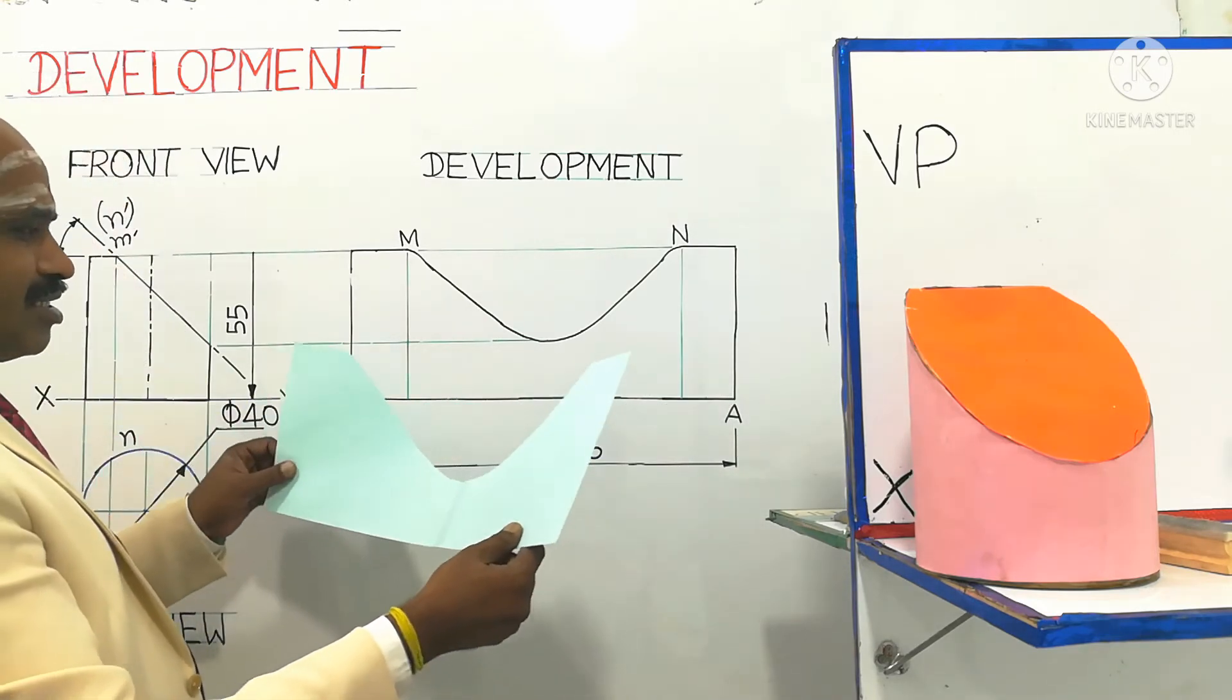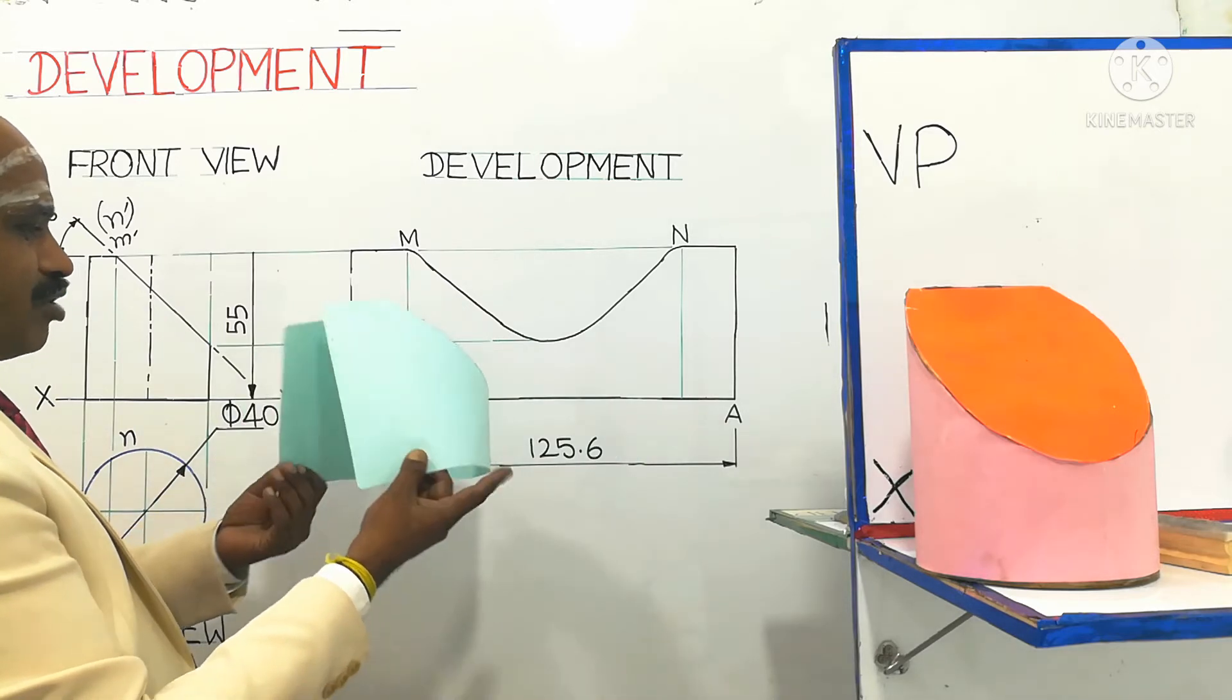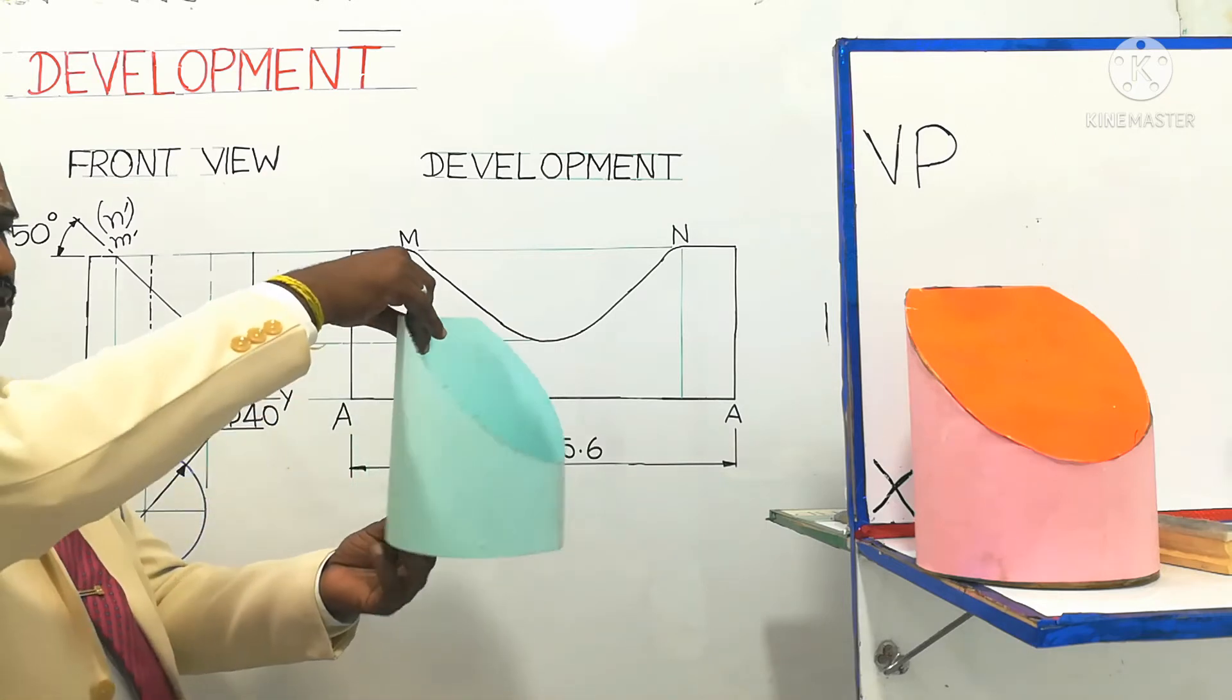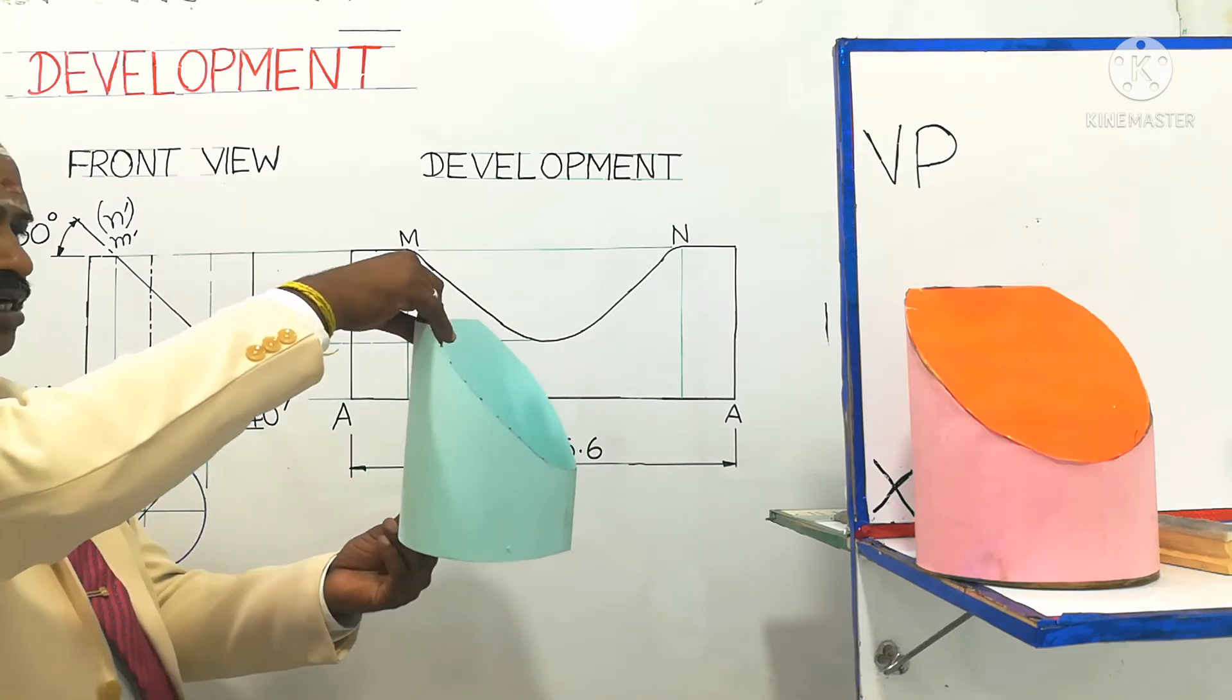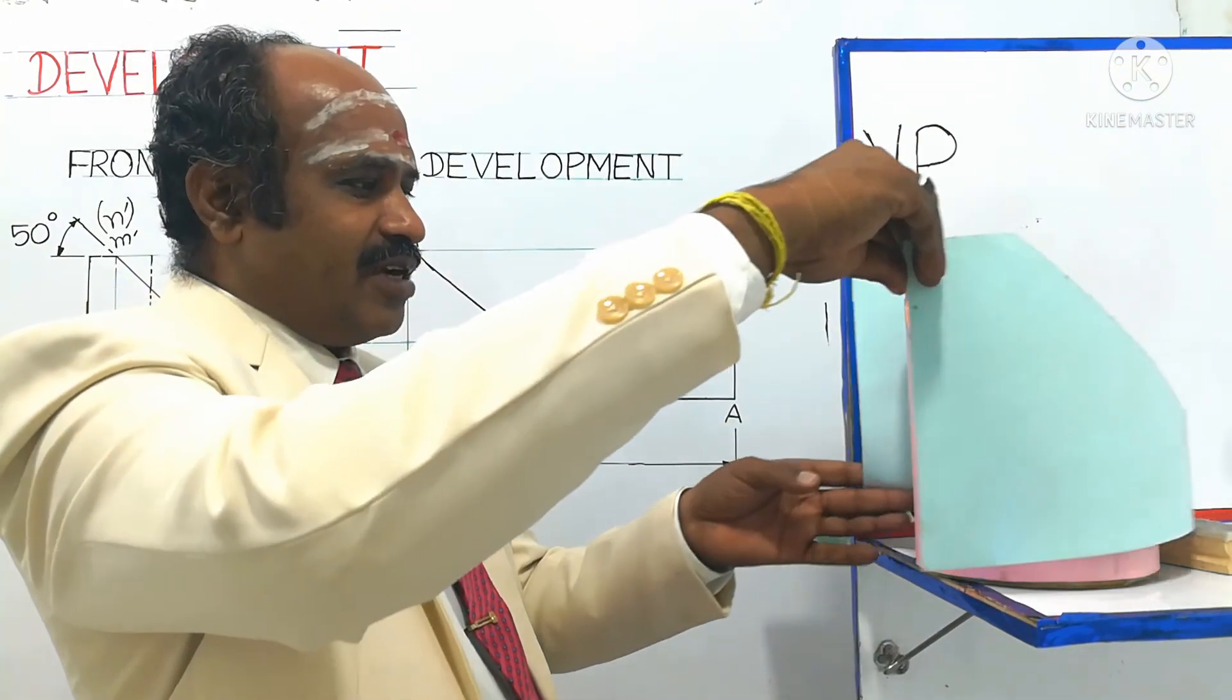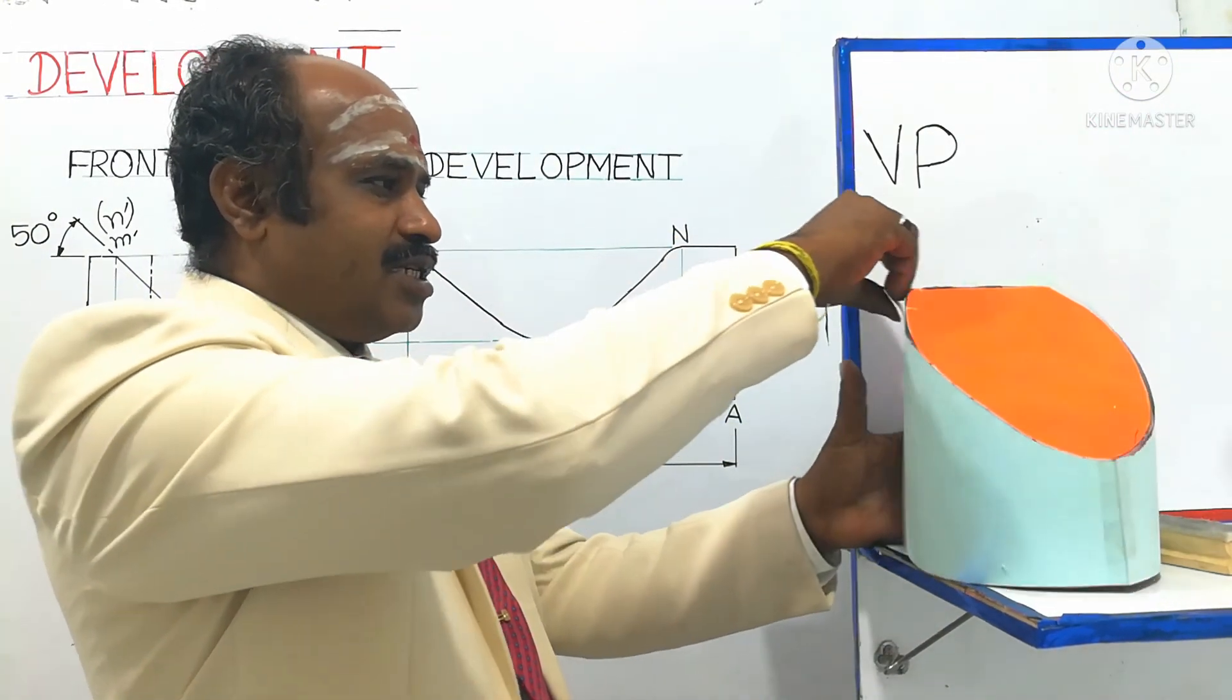On rolling this sheet, both A will be joined and form a single vertical A. This is the profile obtained. This much sheet is required to cover the lateral surface, the outside surface of this cylinder.